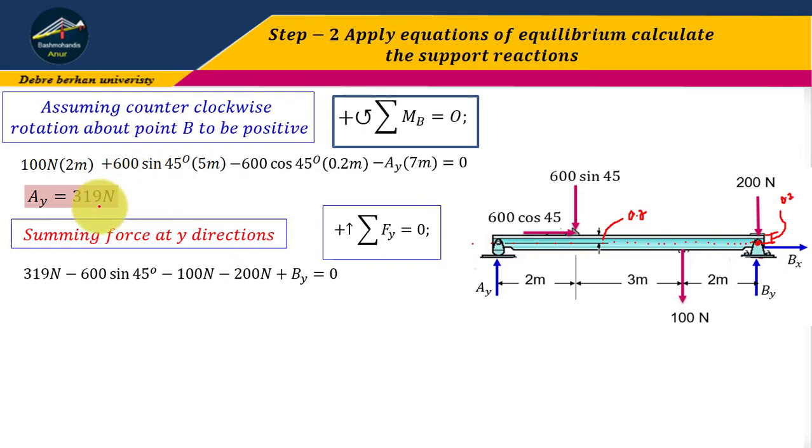Simply, Ay is 319 Newtons, it is upward, minus 600 sin 45 degrees, minus 100 Newtons, minus 200 Newtons, plus By. Here, when we are assuming our unknowns, we have to assume them in the positive direction. If the result is negative, then the arrow is in the opposite direction.